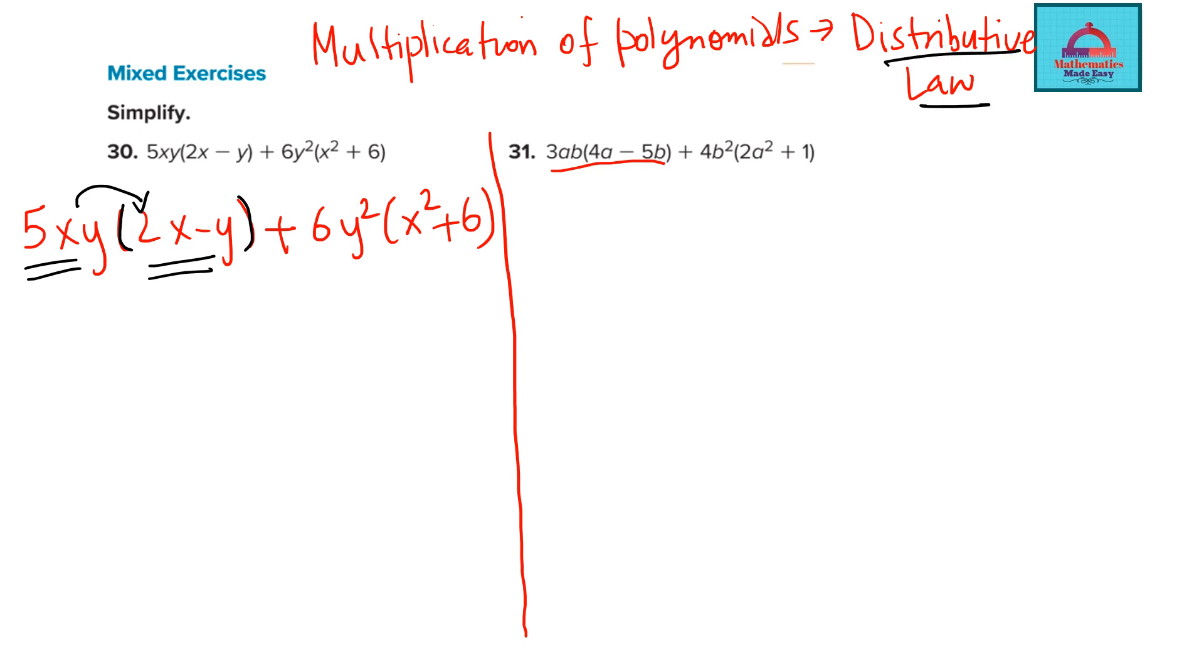So this bracket tells 5xy is multiplied to 2x minus y. And as I told you we apply distributive law. So we will multiply term by term. The first term 5xy will multiply with the first term 2x. And then this 5xy will also multiply with the second term.